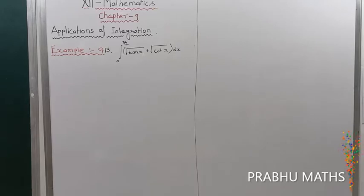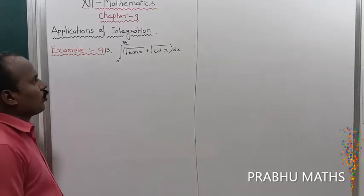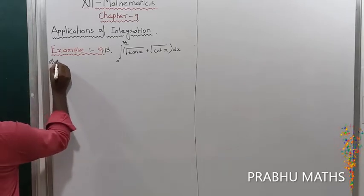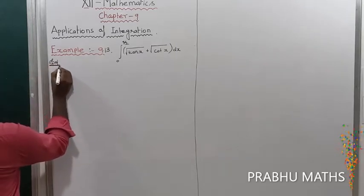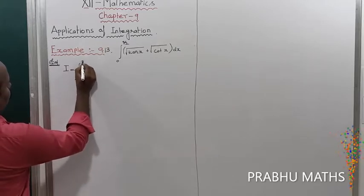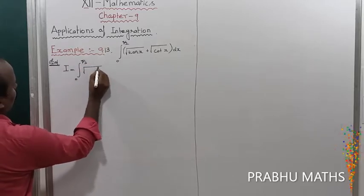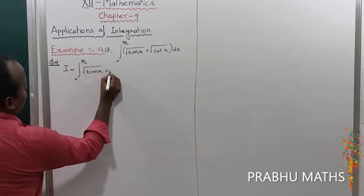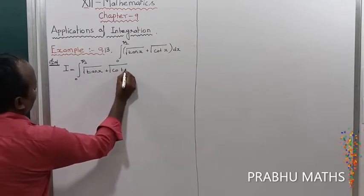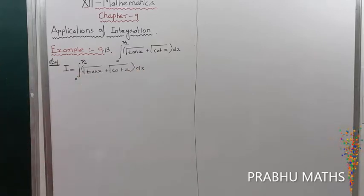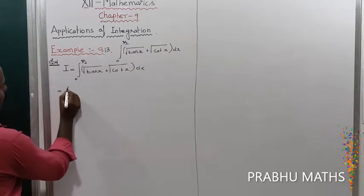Example 9.13: Evaluate the integral from 0 to π/2 of (√tan x + √cot x) dx. Let us consider the given integral I = ∫₀^(π/2) (√tan x + √cot x) dx.